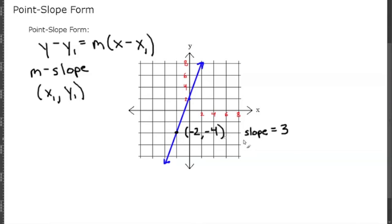So it's going to be y minus our y1, which is negative 4. So minus a negative 4.